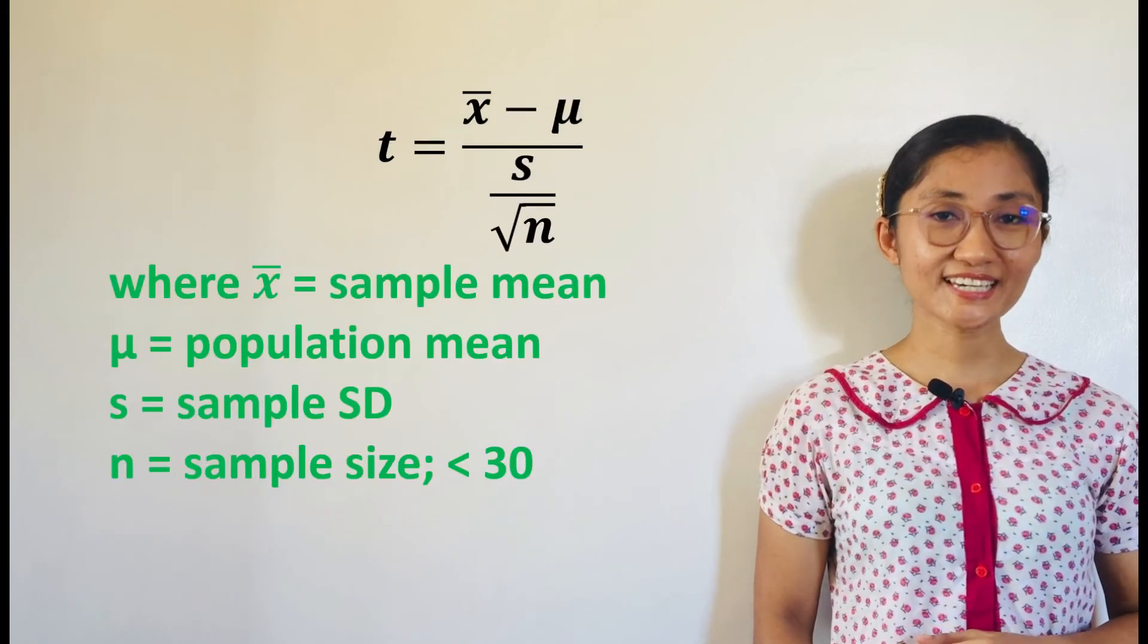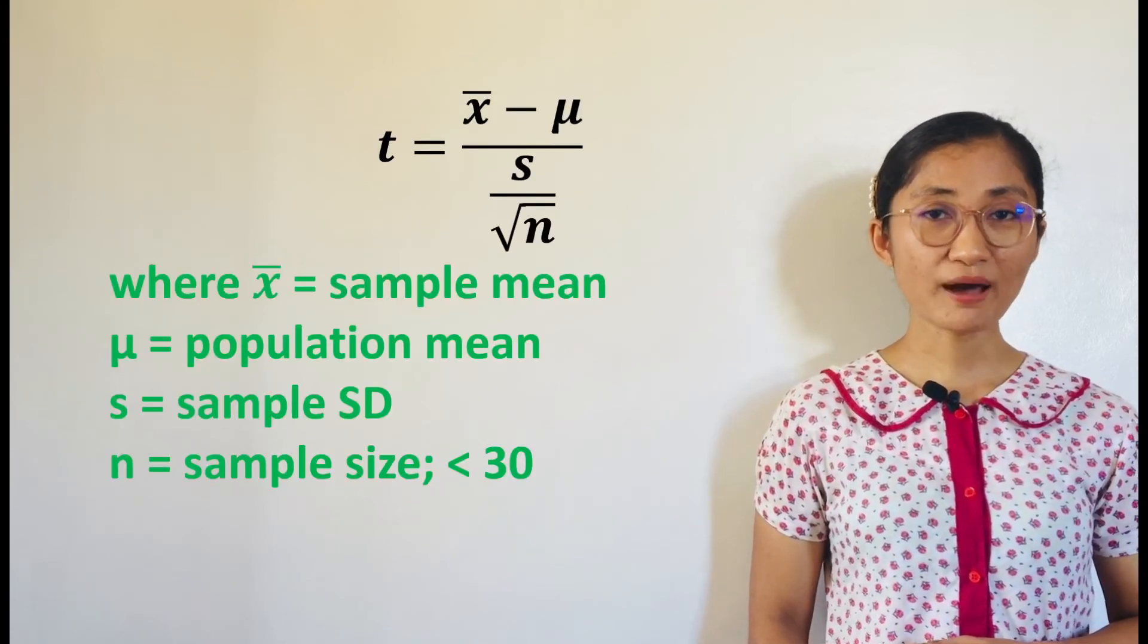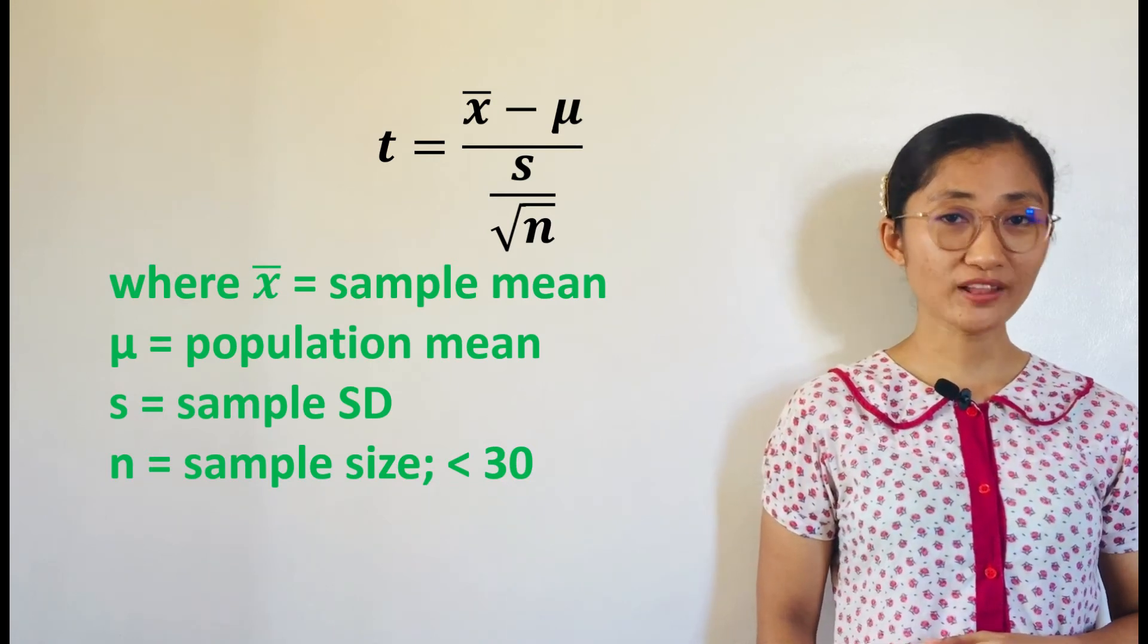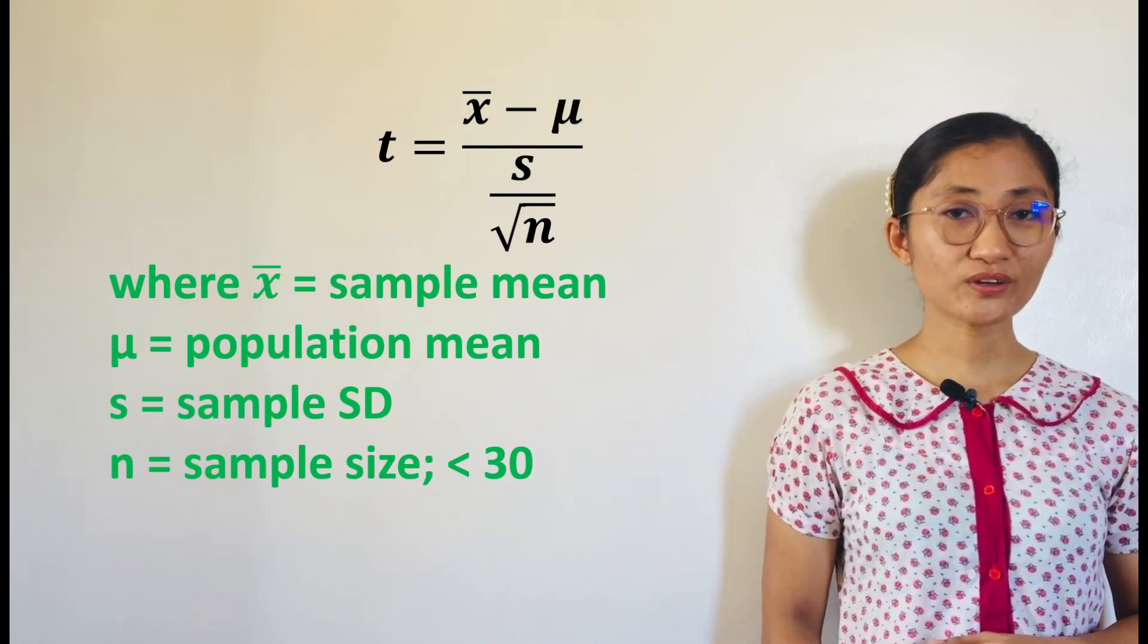On the other hand, T-test is used when n is less than 30, the population is normal or nearly normal, and the population standard deviation and population variance are both unknown. The formula in finding the T-value is T equals X-bar minus mu over s over square root of n.